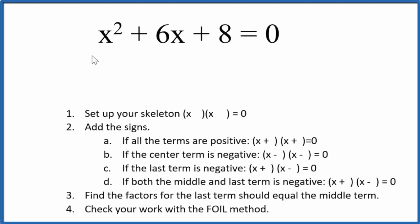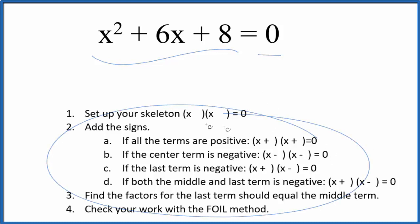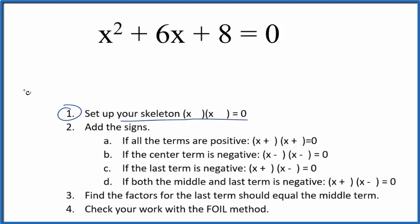Let's factor the equation x squared plus 6x plus 8 equals 0, and we'll use these guidelines here to help us. So the first thing we want to do is set up our skeleton equation, and that's going to look like this.